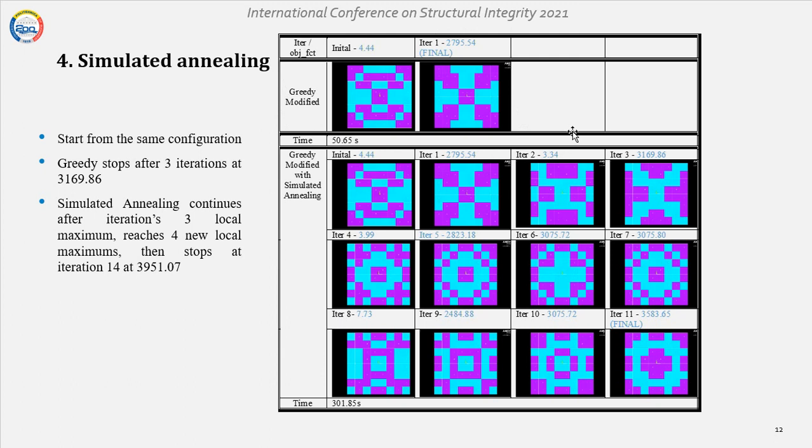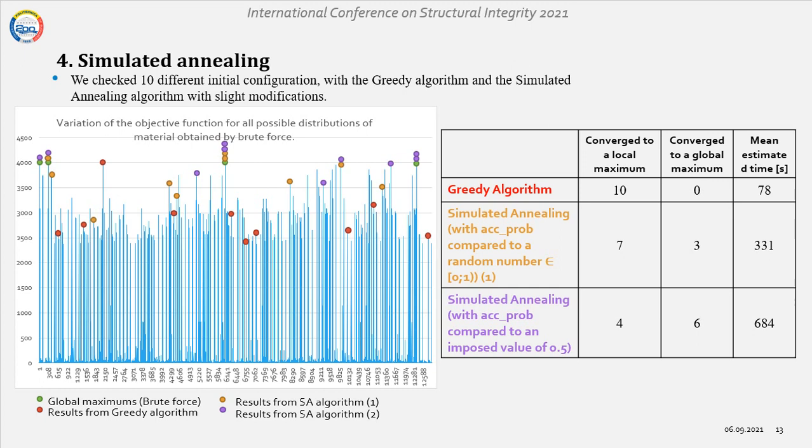This is another test. We see that the greedy algorithm only ran one iteration while the simulated annealing reached a higher value and ran 11 iterations. And in order to get a better sense of how it works, we made a chart. We ran 10 more tests to get an overview of the results with slight modifications to the simulated annealing algorithm.